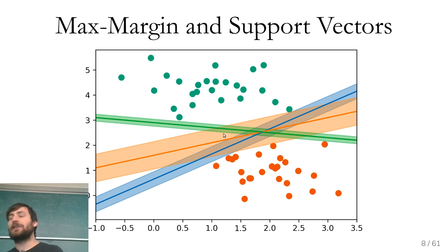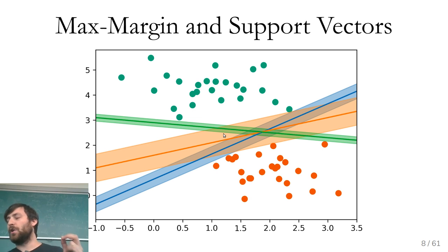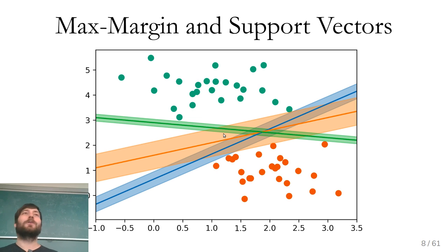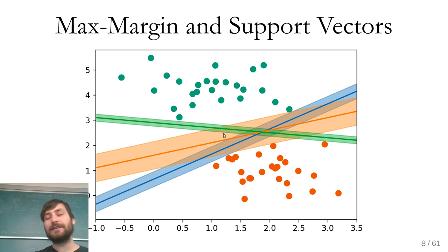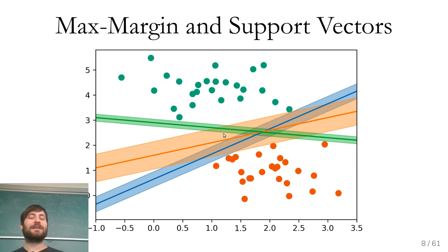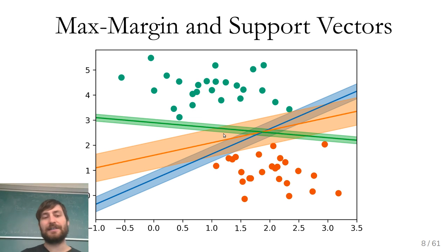In practice, usually there is no way to separate the dataset linearly, particularly in lower dimensions — very often there's no possibility to draw any line with any margin. So what people use in practice is called the soft margin SVM, where you let some points be inside the margin. Basically you want as wide a margin as possible with as few points inside the margin.